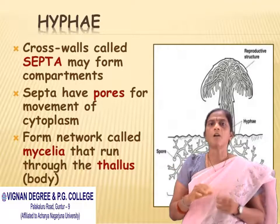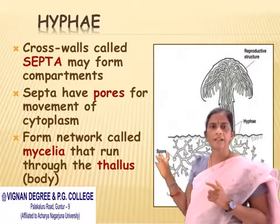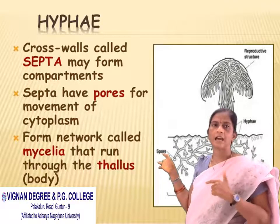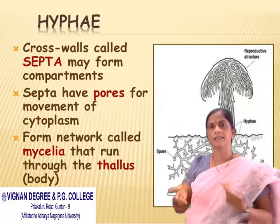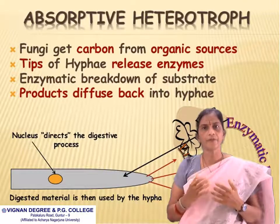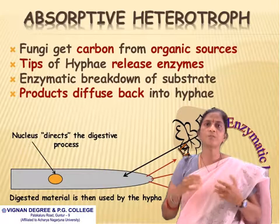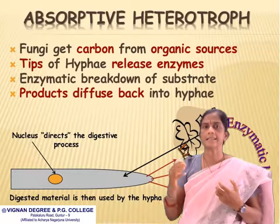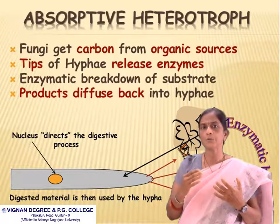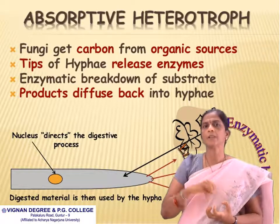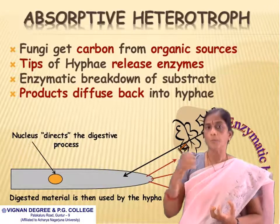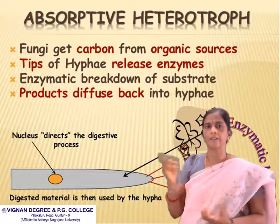The hyphae form a network called mycelia that runs through the thallus — the body of fungi. Fungi get carbon from organic sources. The tips of hyphae release enzymes, and the enzymatic breakdown products diffuse back into the hyphae.